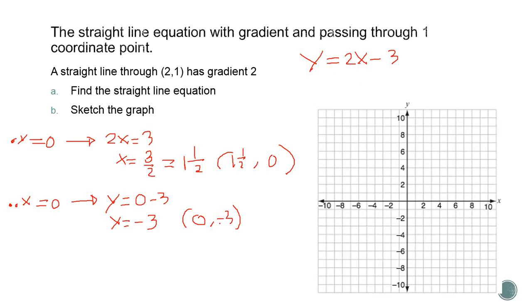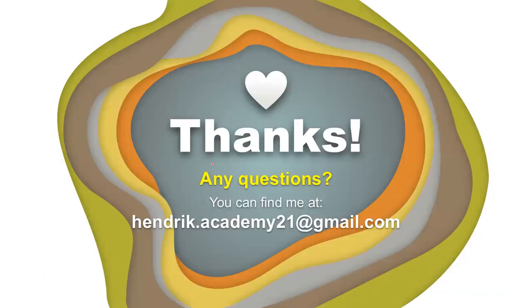So the coordinate point 0 comma negative 3. Now we're going to find 0 comma negative 3 here, this point, this one, and 1 and a half comma 0, 1 here, 1 and a half here. Let's we draw a straight line.